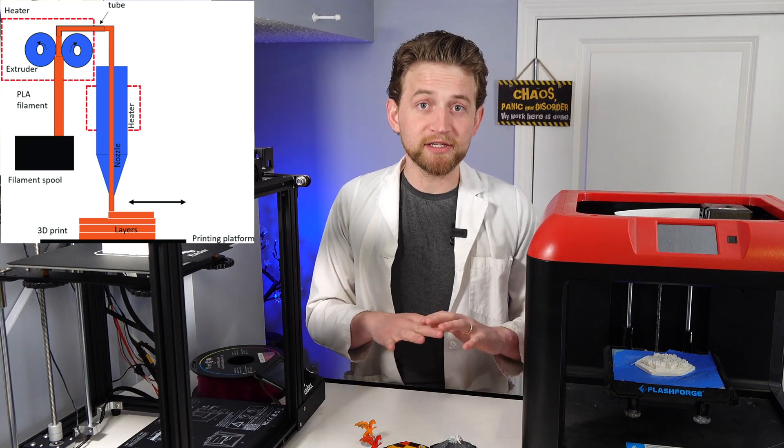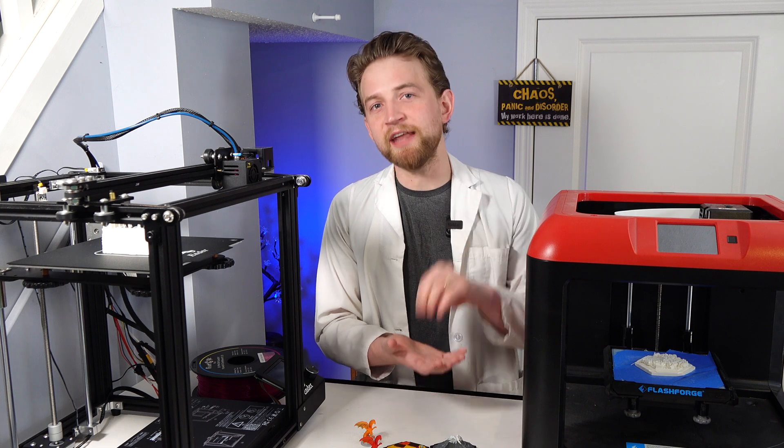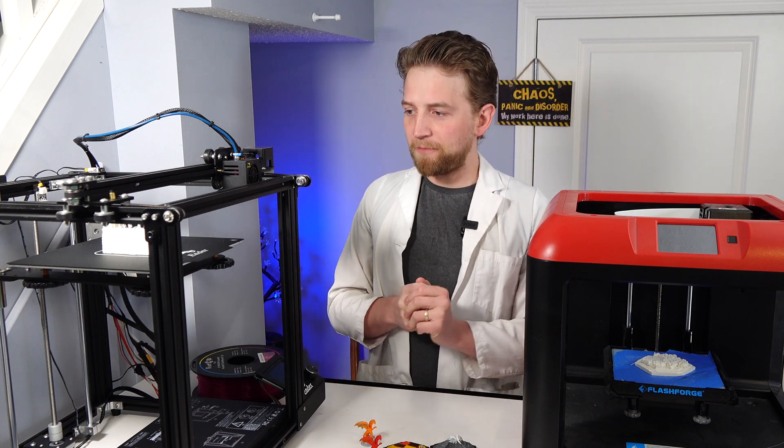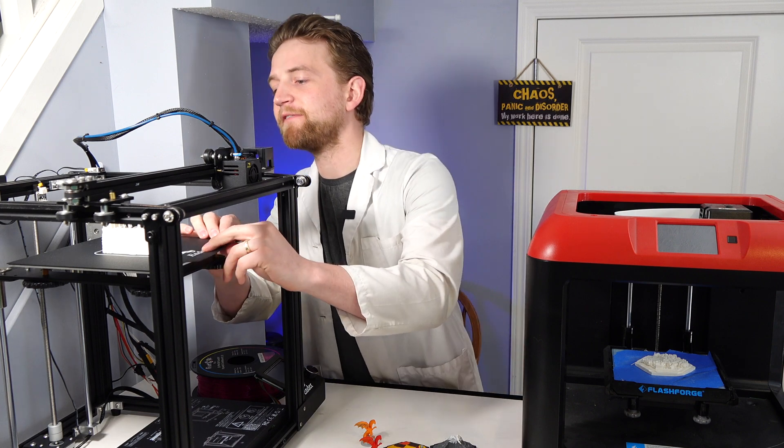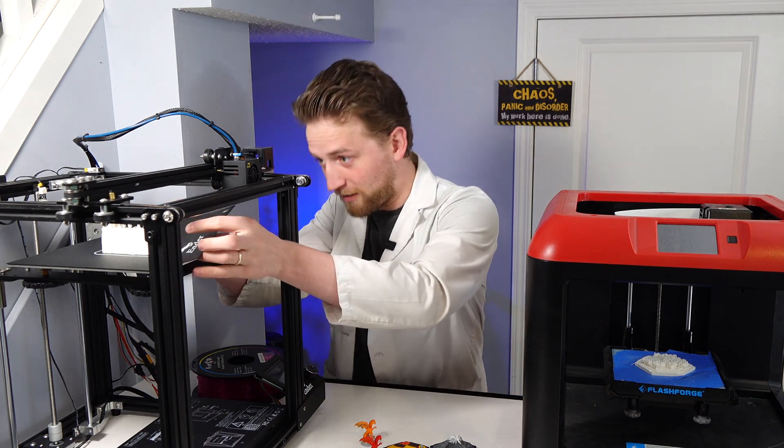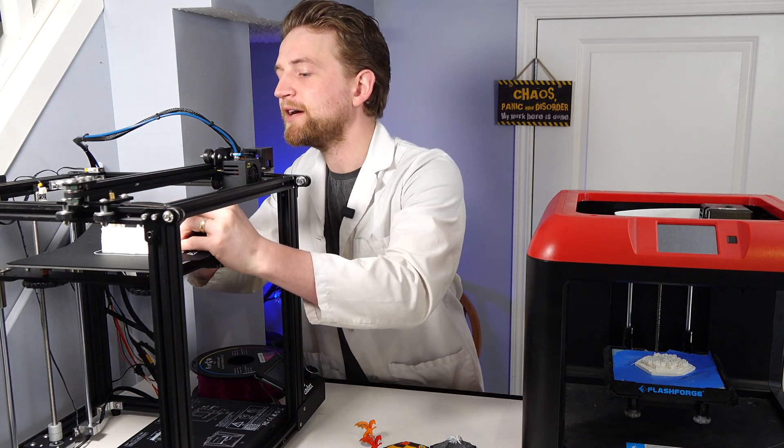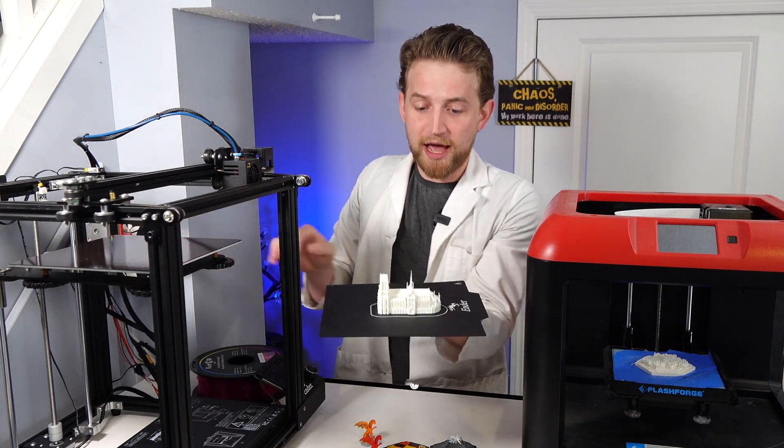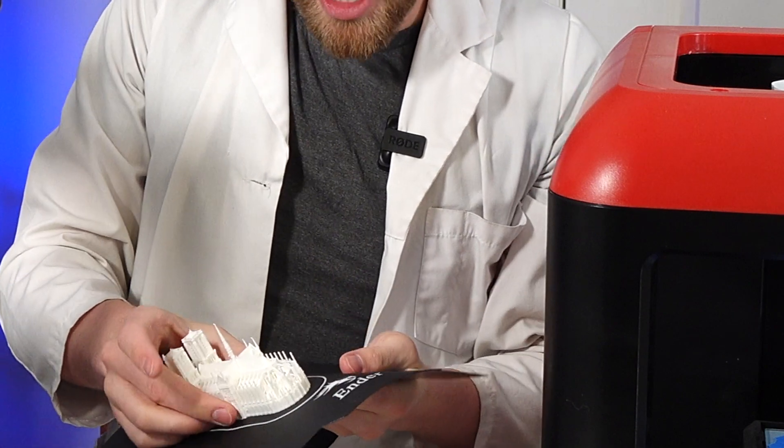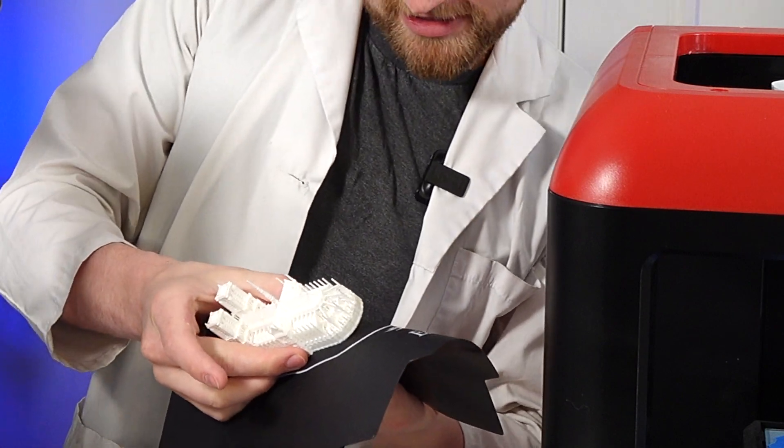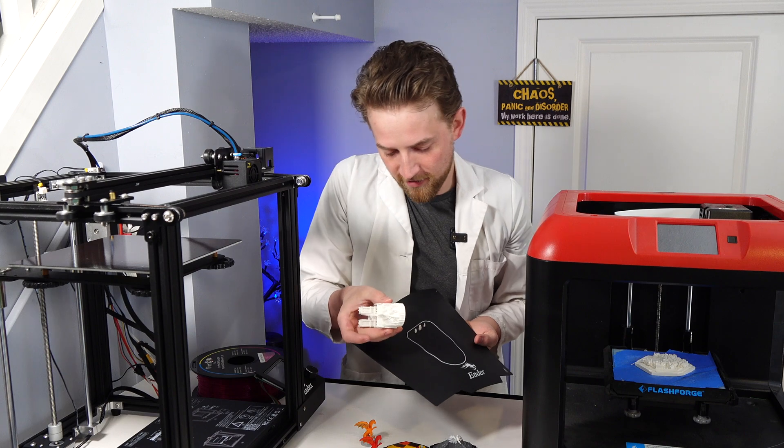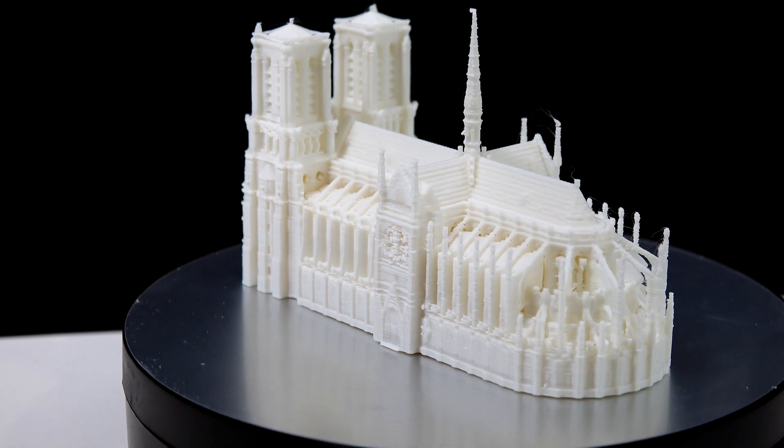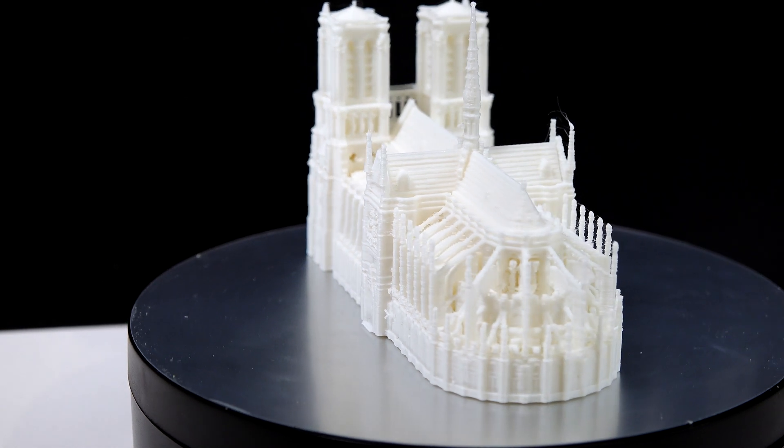That plastic solidifies and hardens into a layer, and then gets fused to the next layer, and the next layer, and all the way up to the top. Now, I've just finished printing off here something really cool. I'm just going to take off this plate. So I just finished printing off Notre Dame's Cathedral, which is pretty cool. Let's just take this off here. And here is a scale model replica of Notre Dame's Cathedral.